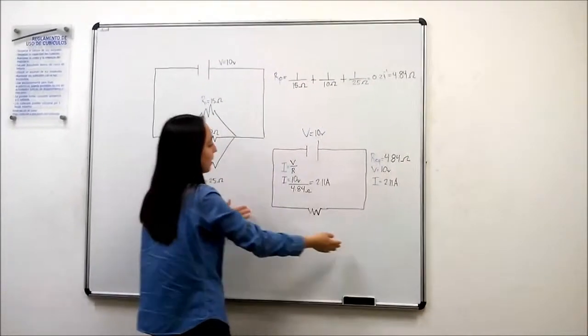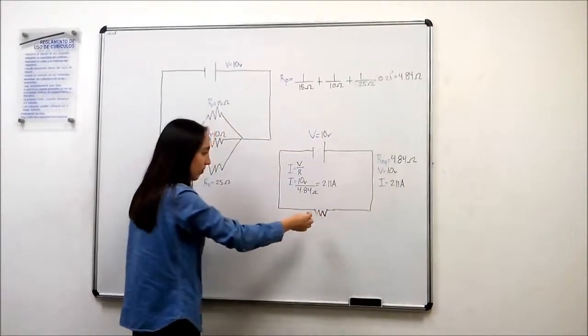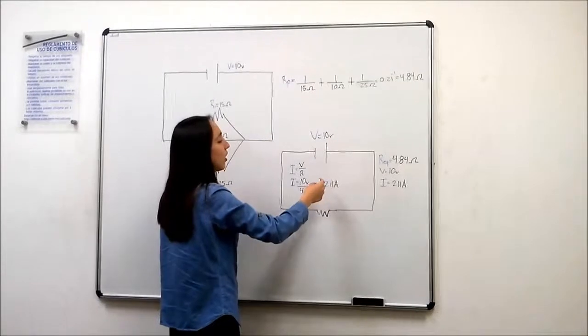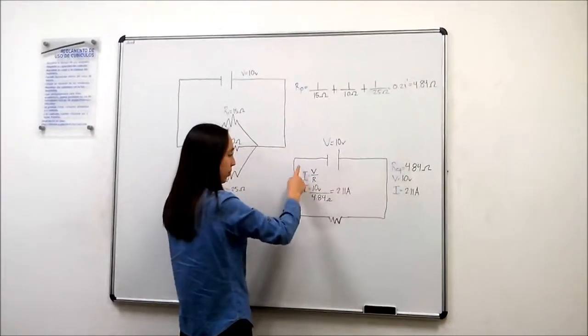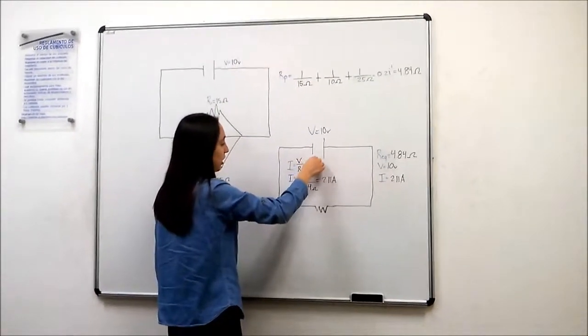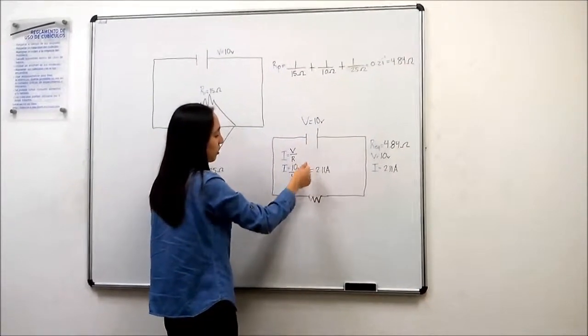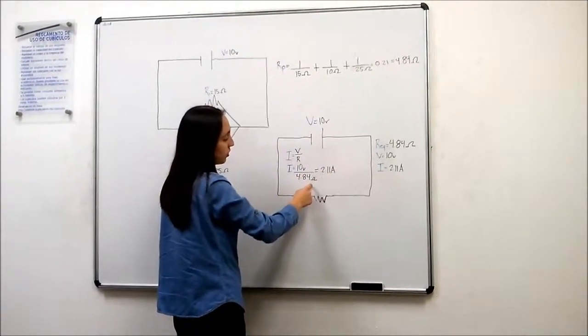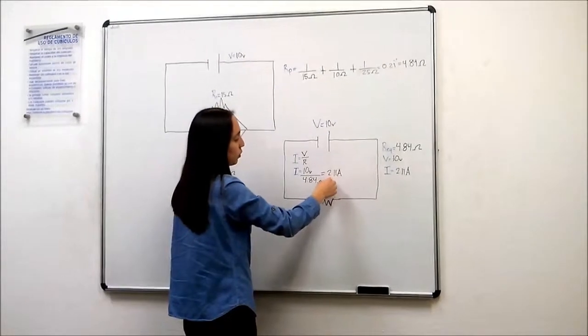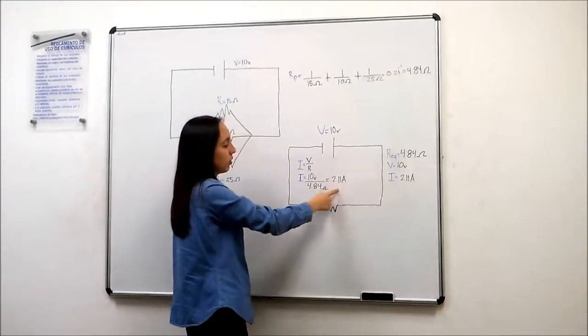And now we have our simplified diagram of the circuit. In order to get the final current we need to use this formula. So we use the voltage divided by the resistance: 10 volts divided by 4.84 ohms. And that gives us a result of 2.11 amperes.